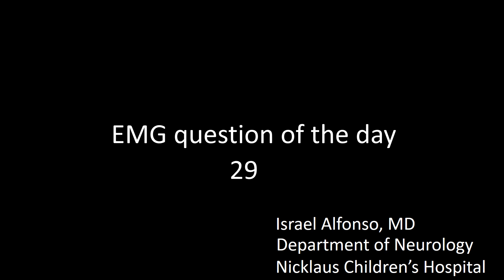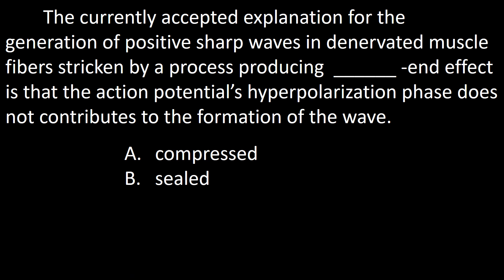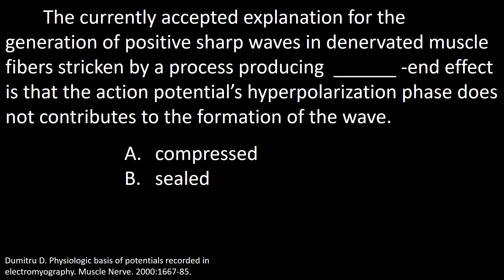EMG question of the day. The currently accepted explanation for the generation of positive sharp waves in denervated muscle fibers stricken by a process producing a dash-N effect is that the action potential hyperpolarization phase does not contribute to the formation of the wave. A: Compressed. B: Sealed.